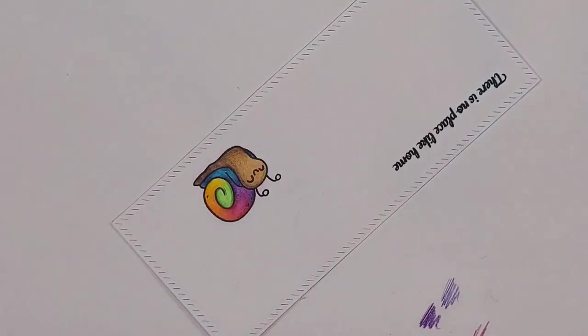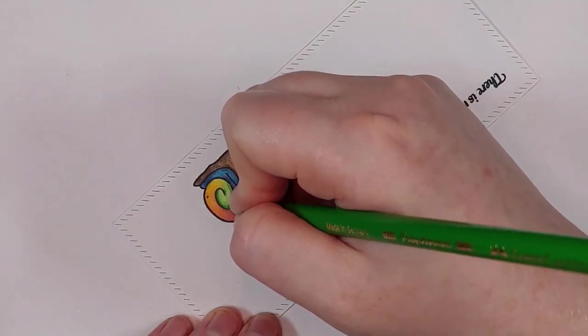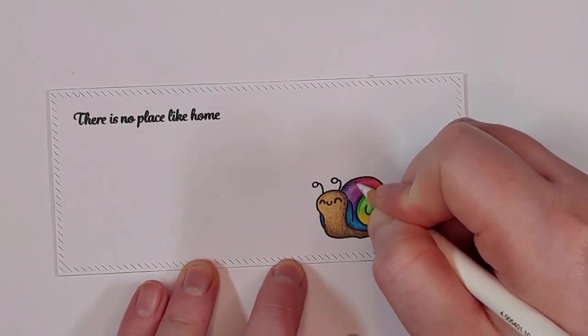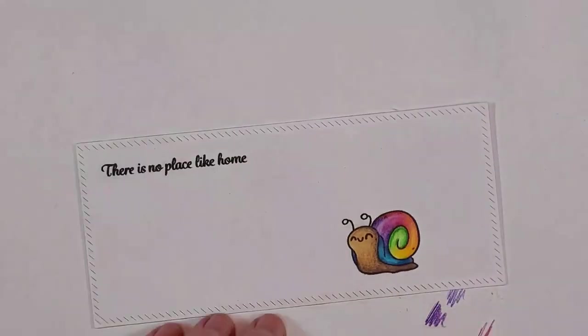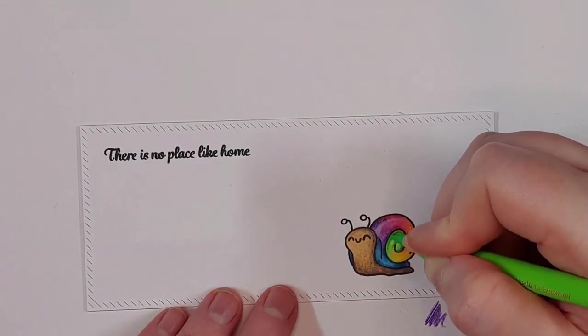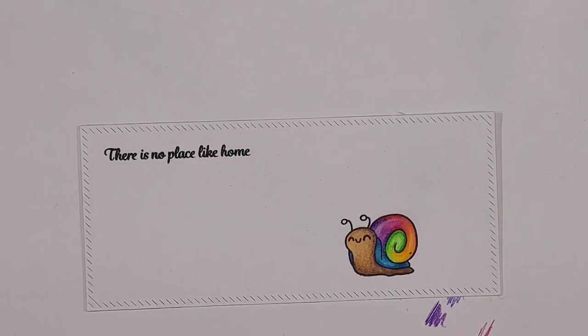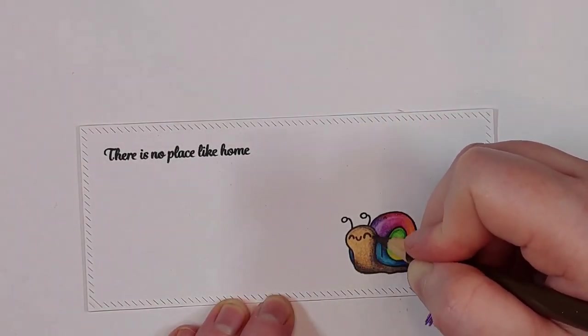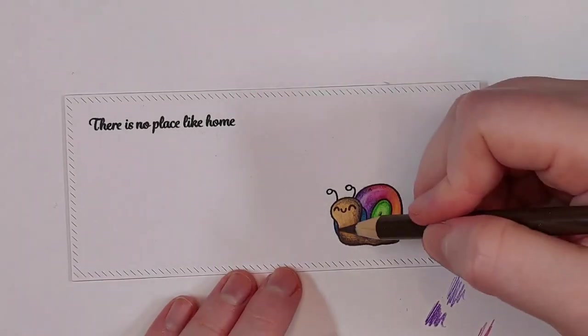I'm just finishing up with the green here and then I will add some highlights with white pencil on the shell. To deepen up the shadows and to add more contrast to the snail's body I am using a black colored pencil.